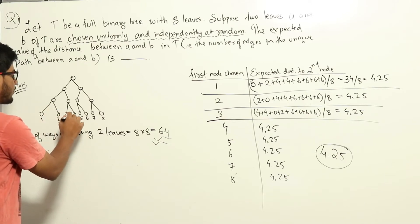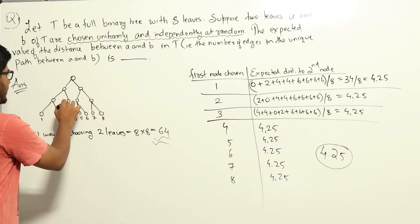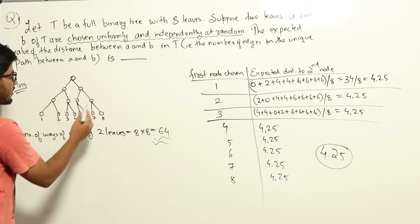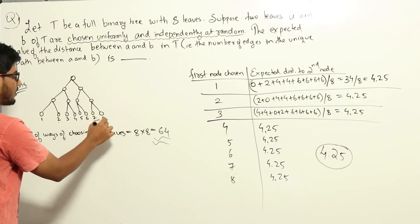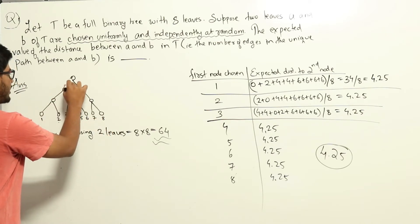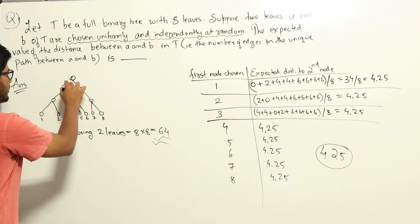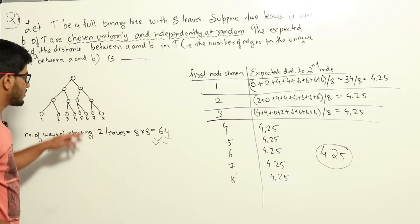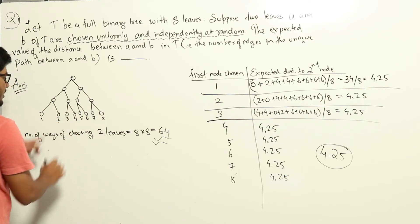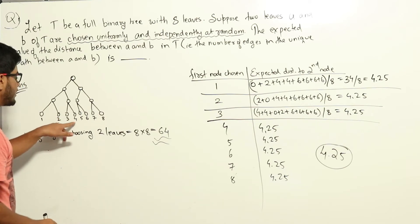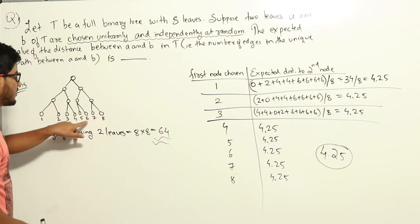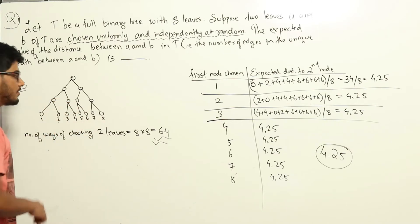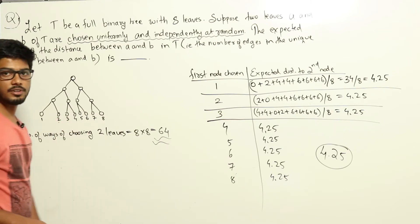If the second node is 3 or 4, the distance will be 4. If the second node is 5, 6, 7, or 8, the distance will be 6. So if I am choosing node 1 again the distance is 0, if I choose node 2 the distance is 2, if I choose either of nodes 3 or 4 the distance is 4, and if I choose any of nodes 5, 6, 7, or 8 the distance is 6. All of these are equiprobable.